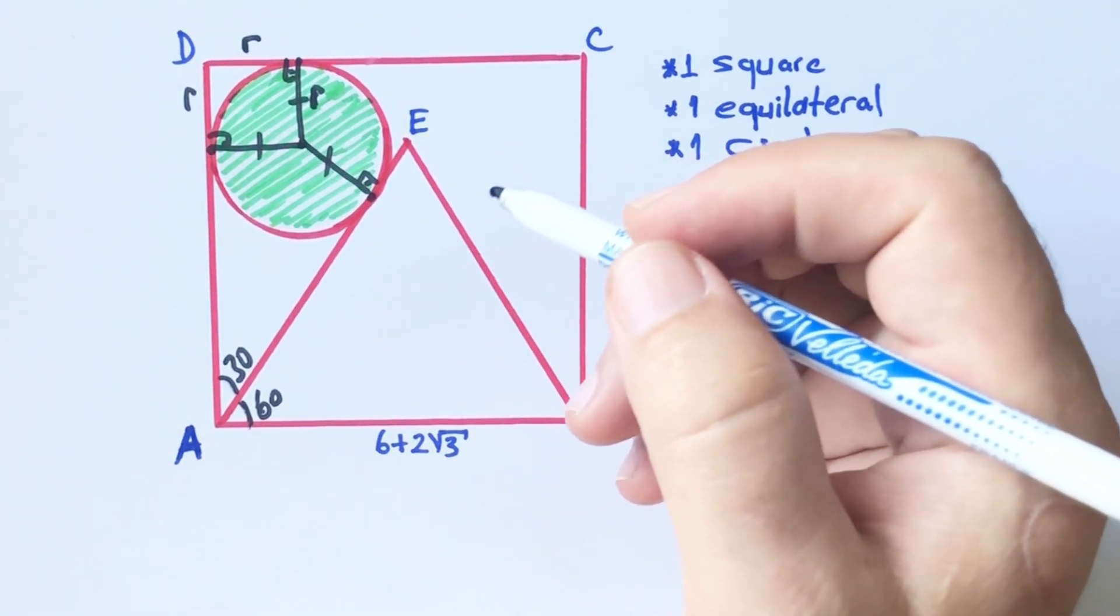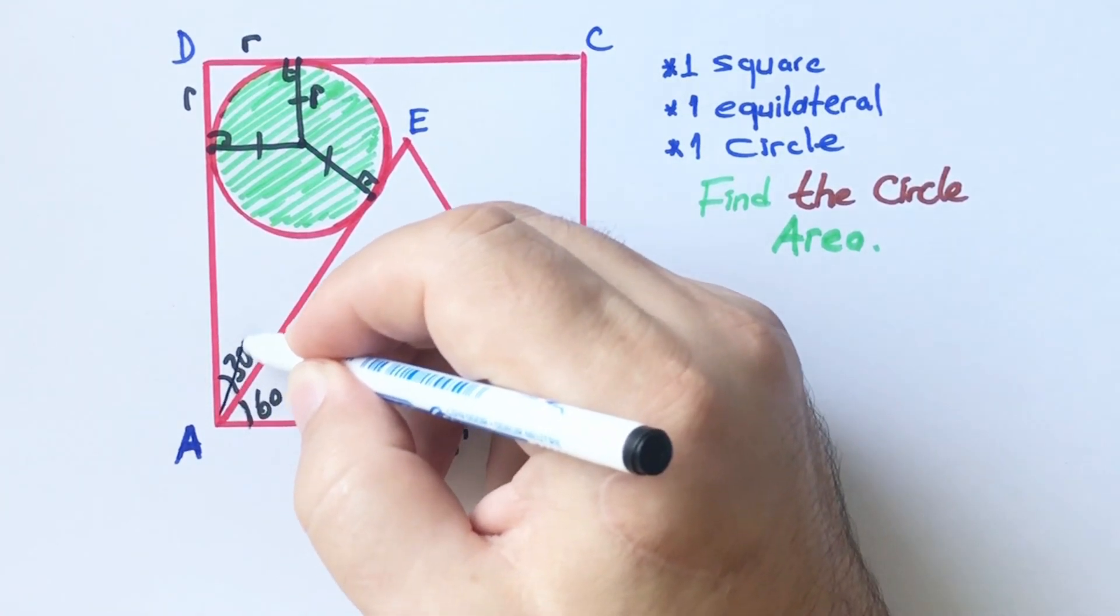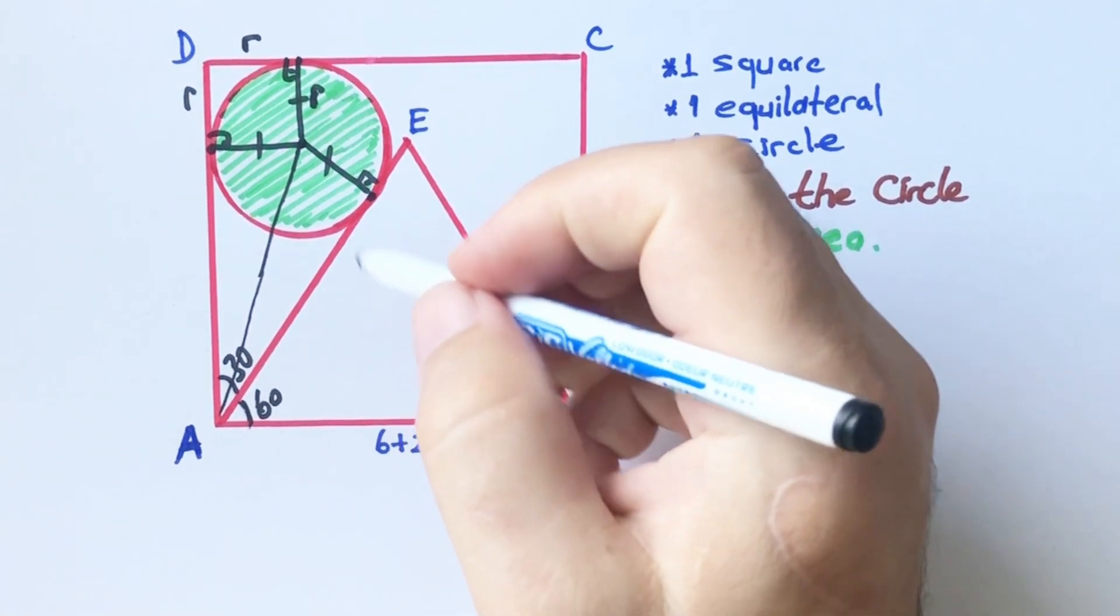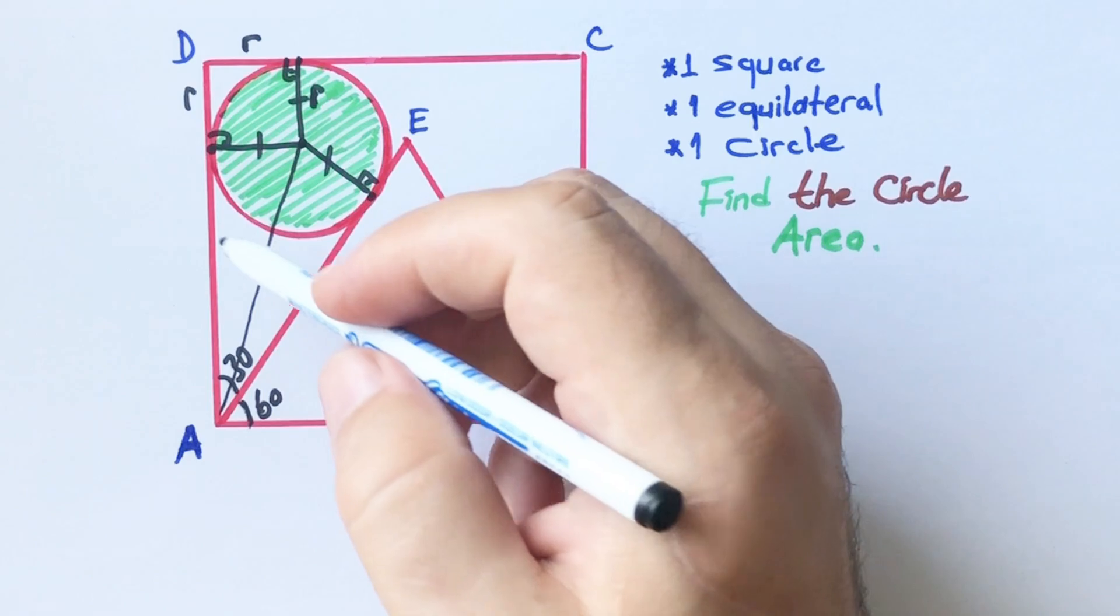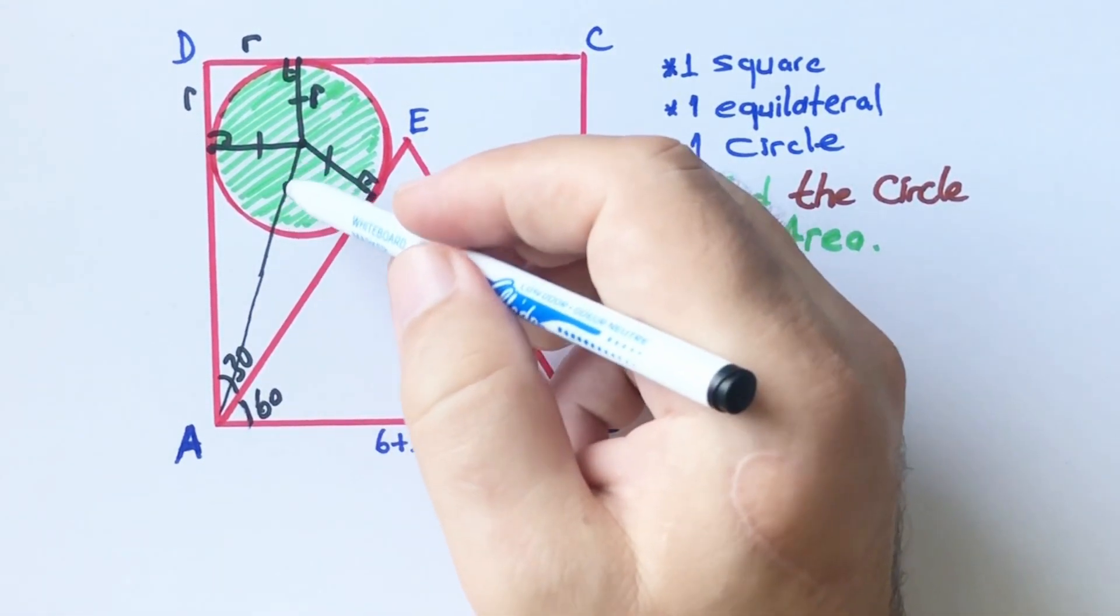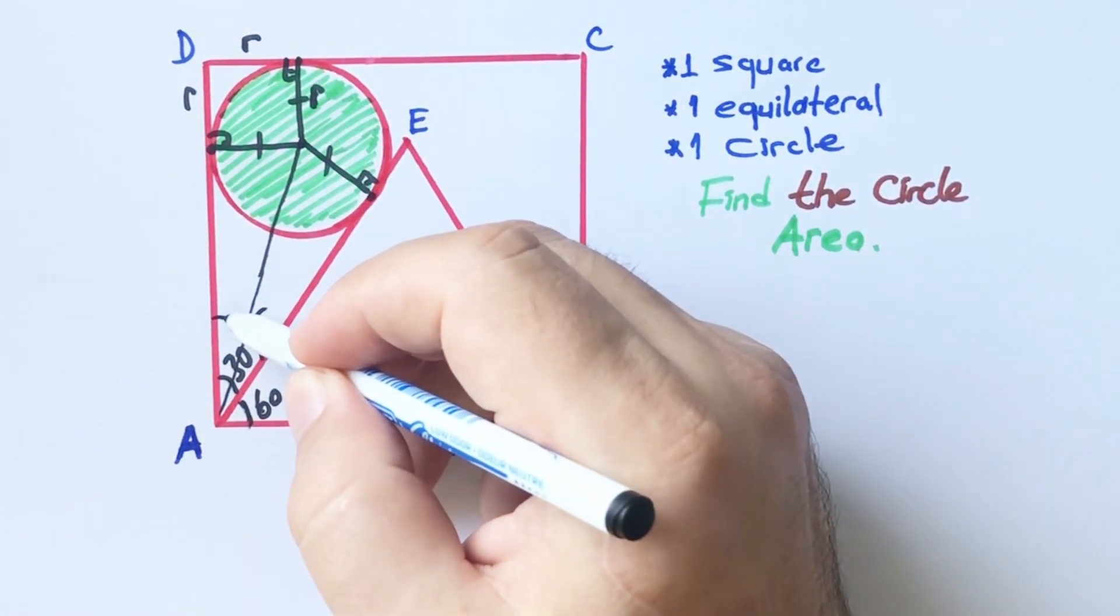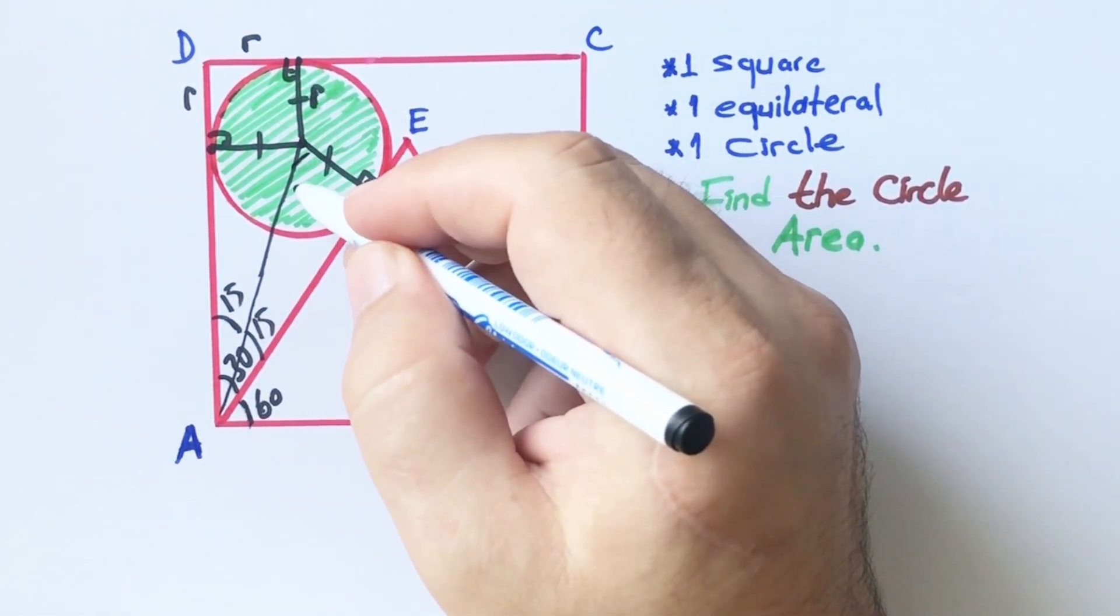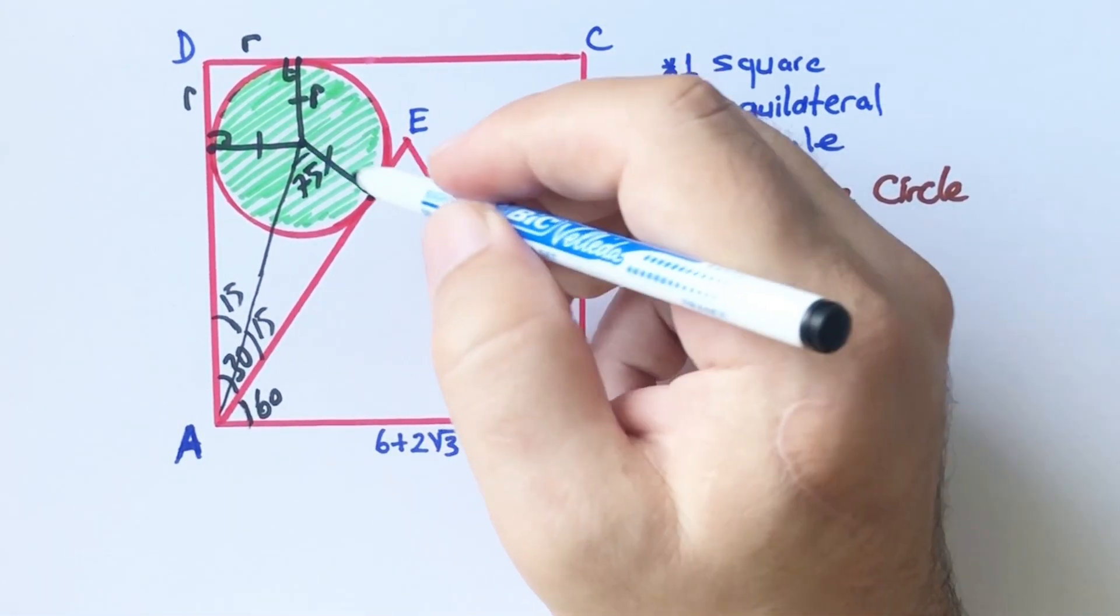If we connect the corner and center point like this, we get two congruent triangles because they have the same length. So if here is 15 degrees, this angle must be 15 degrees, and 75 degrees left here.